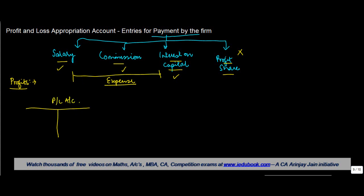When you were making your profit and loss account, you had a debit side and a credit side. On the debit side you used to put all your expenses, and all incomes used to come on the credit side. So when there is an expense, what is the entry that you make?